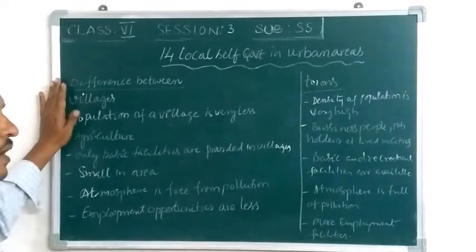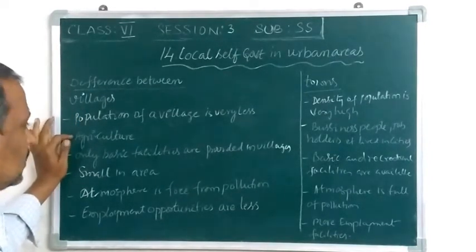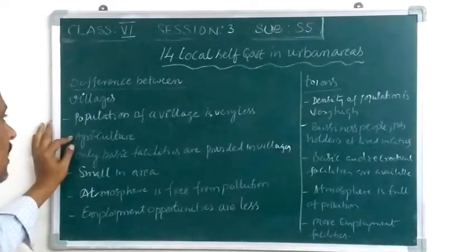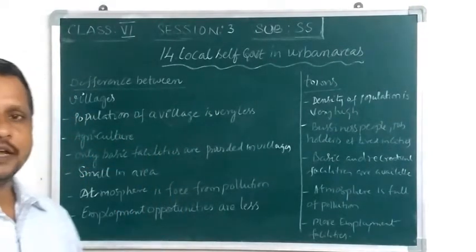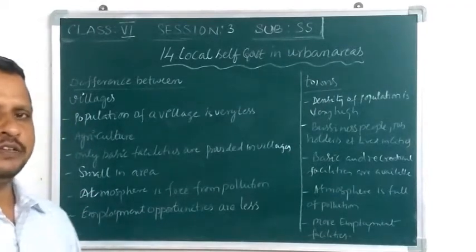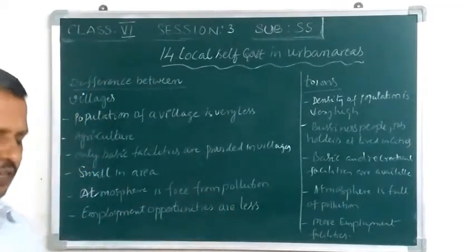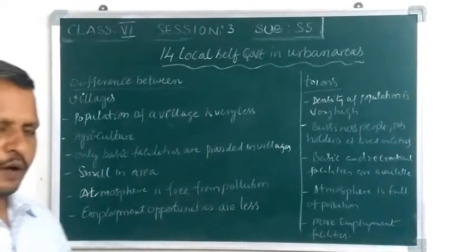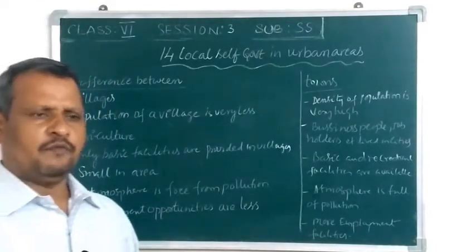What is the main occupation of villages? Agriculture is the main occupation and livelihood for villagers. 70% of the people are engaged in agriculture, and 50% of GDP comes from the agriculture sector. Agriculture is one example of the primary sector. The Indian economy is classified into three sectors: Primary, Secondary, and Tertiary or Service sector. The primary sector includes agriculture, poultry, farming, animal husbandry, quarrying, forestry, etc.